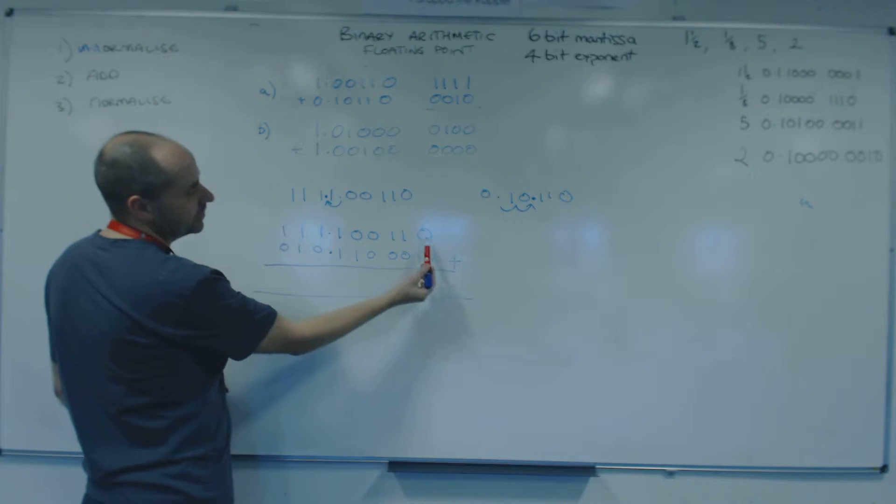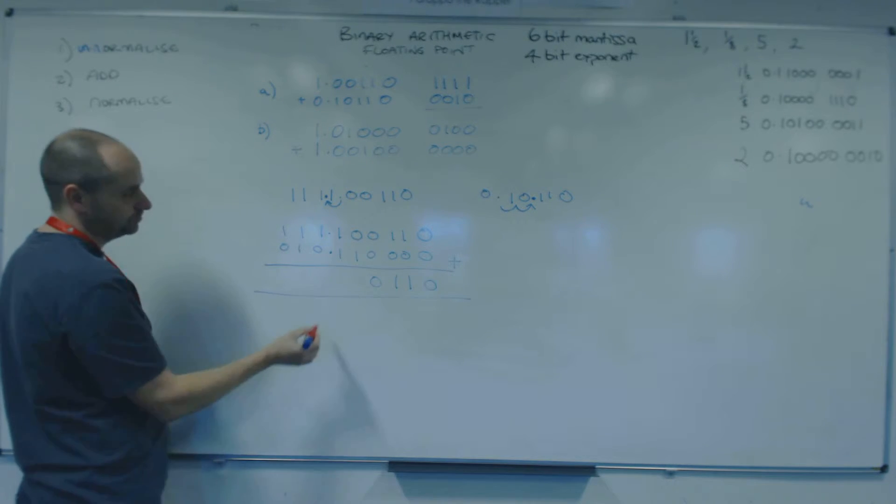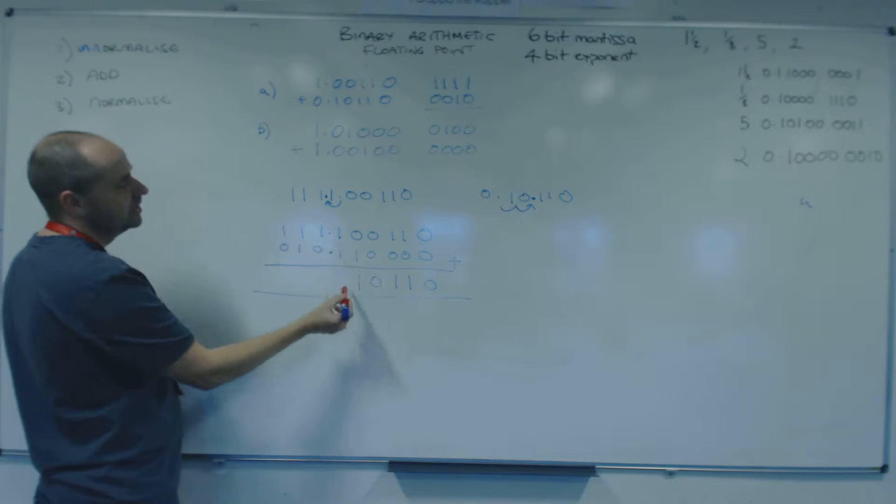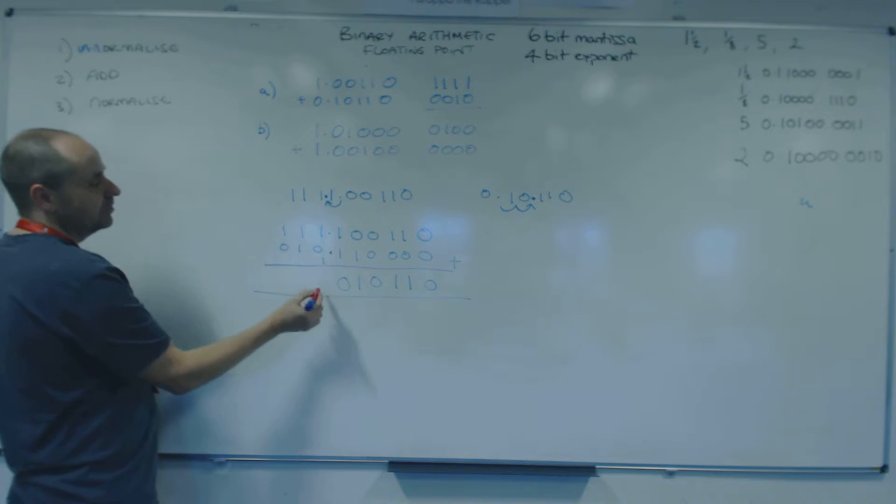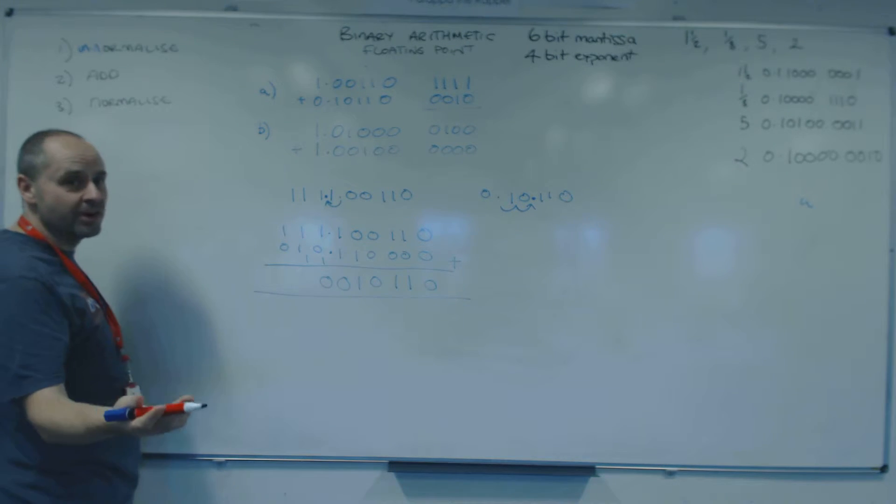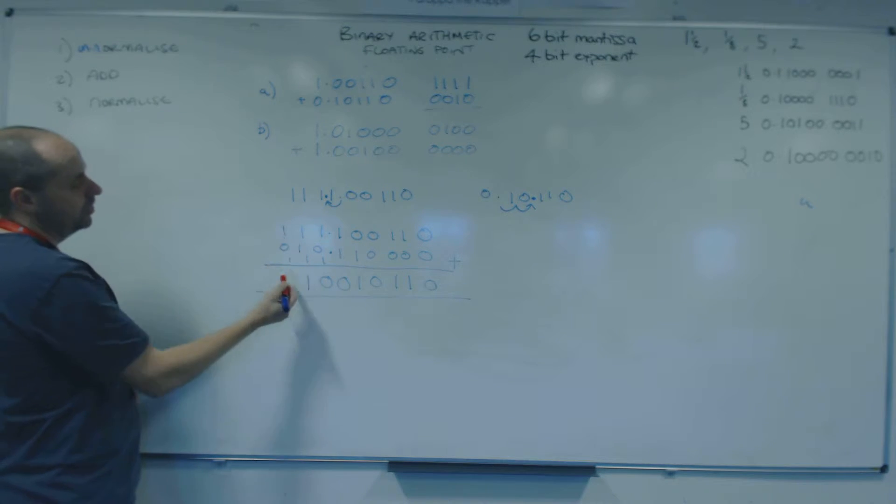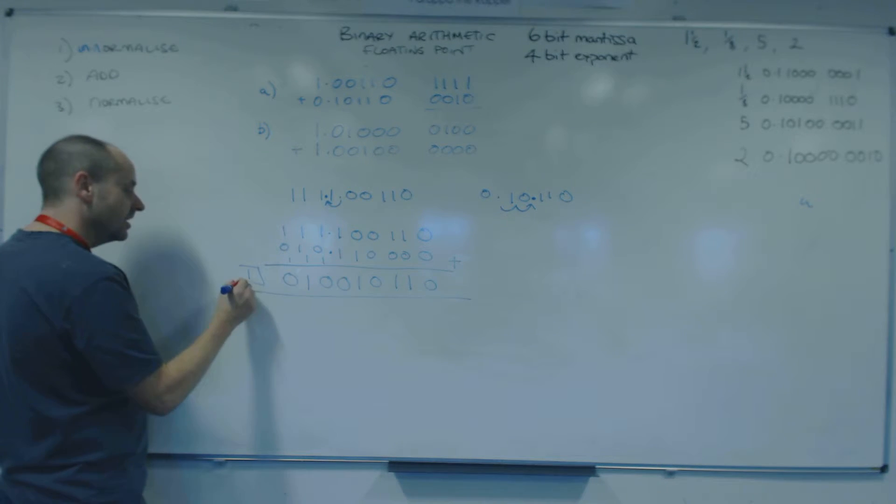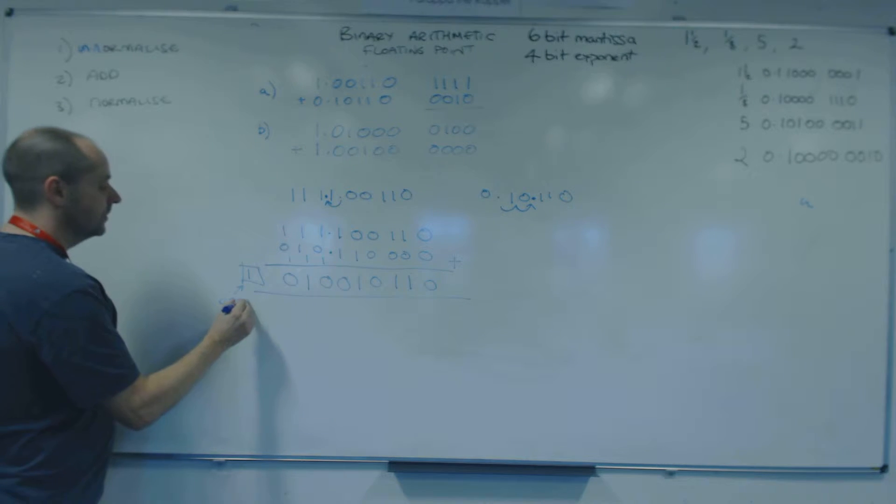Right, so let's just go through and add it together. So we've got 0, 0. 1 and 0 is 1. 1 and 0 is 1. 0, 0 and 0. 1 and 0 is 1. Then we've got 2, which is 0, carry 1. 1, then we've got 2 again, which is 0, carry 1. Then we've got 3, which is 1, carry 1.